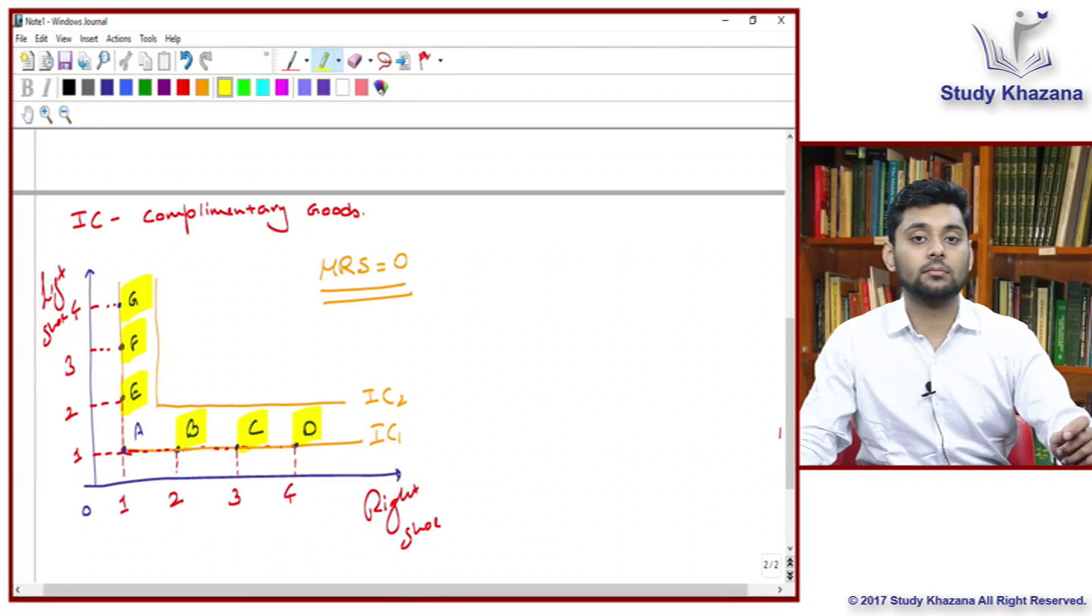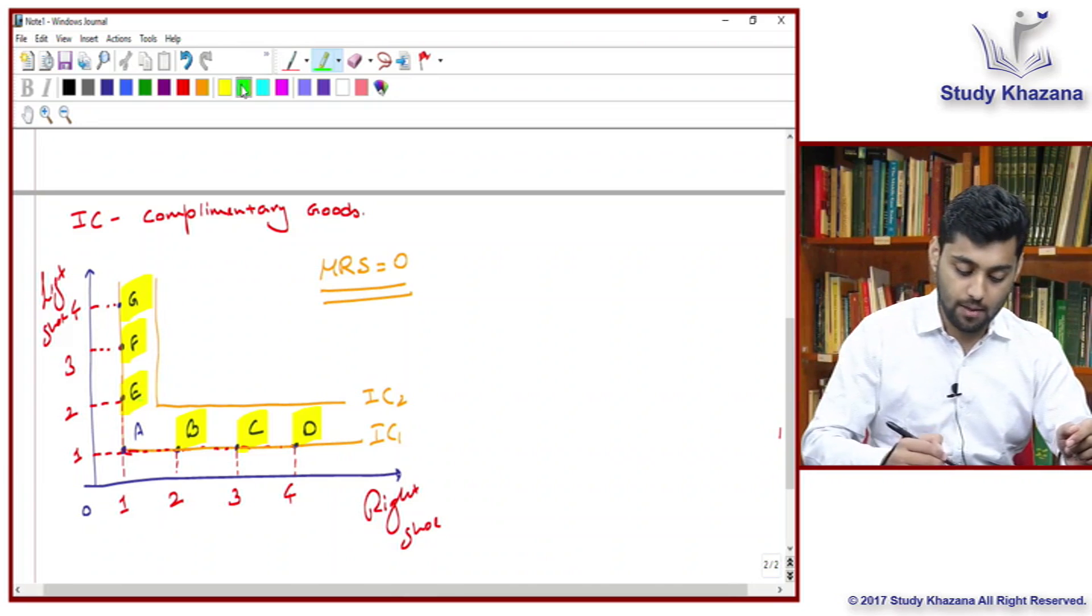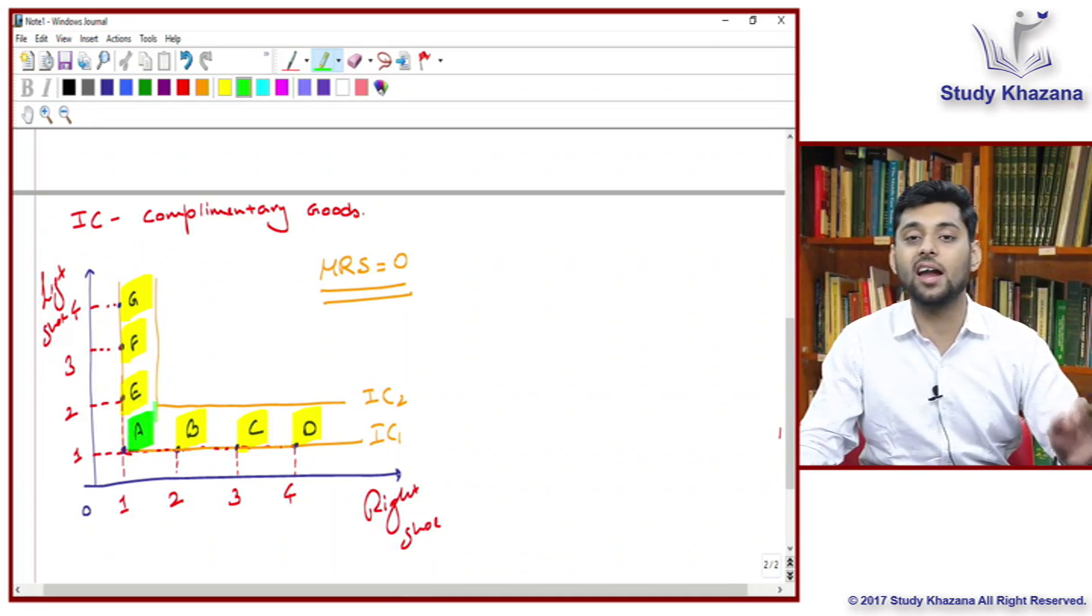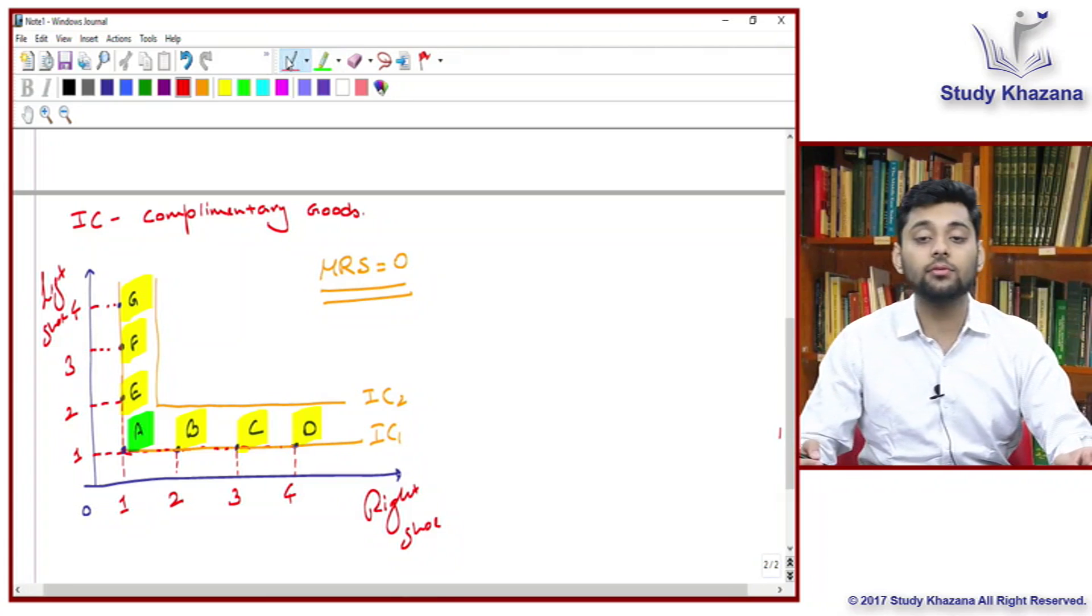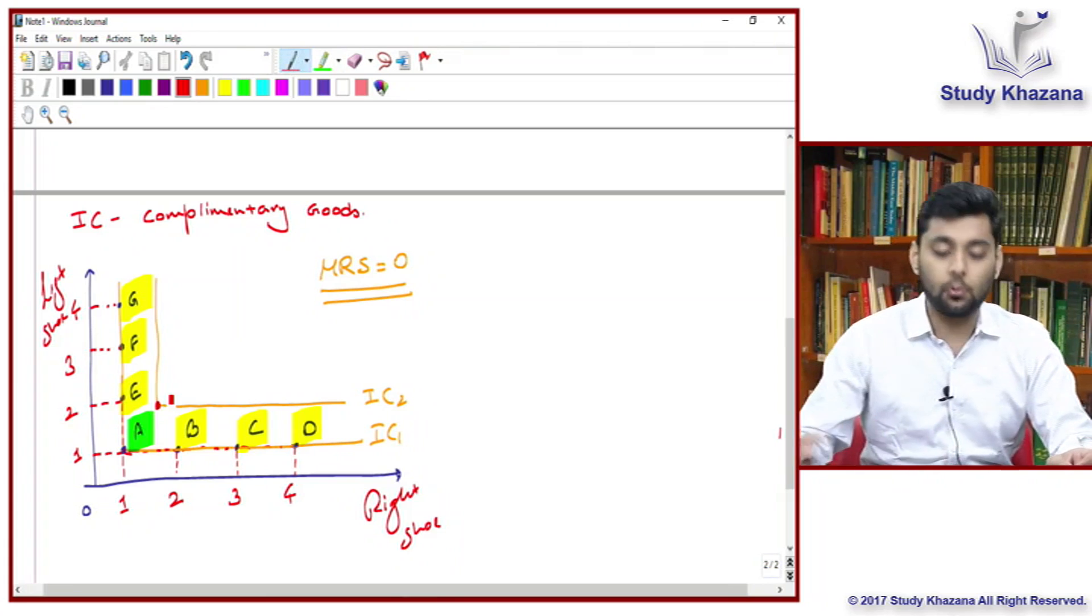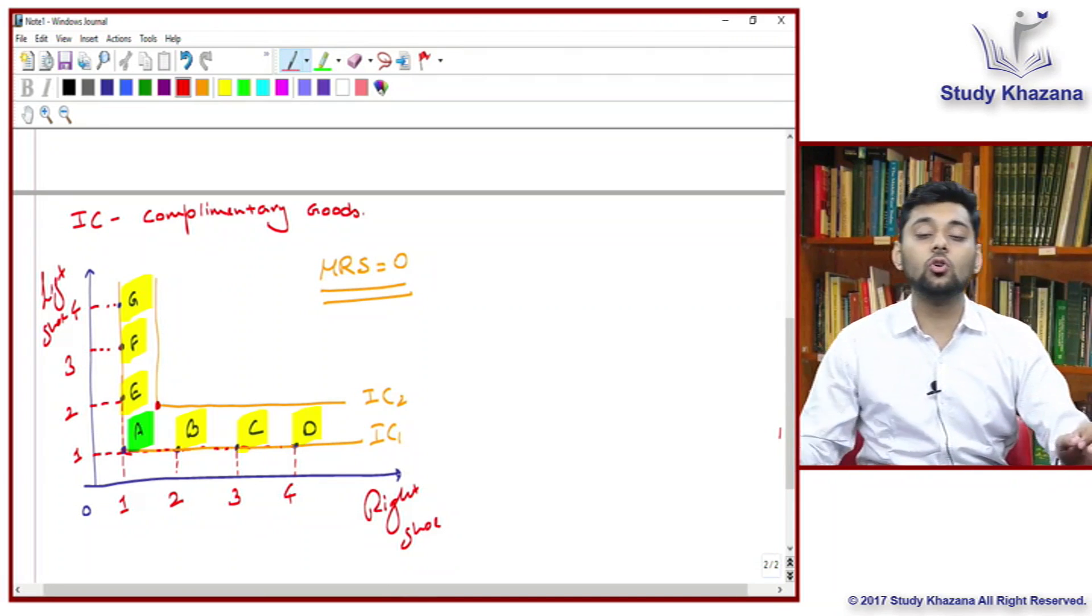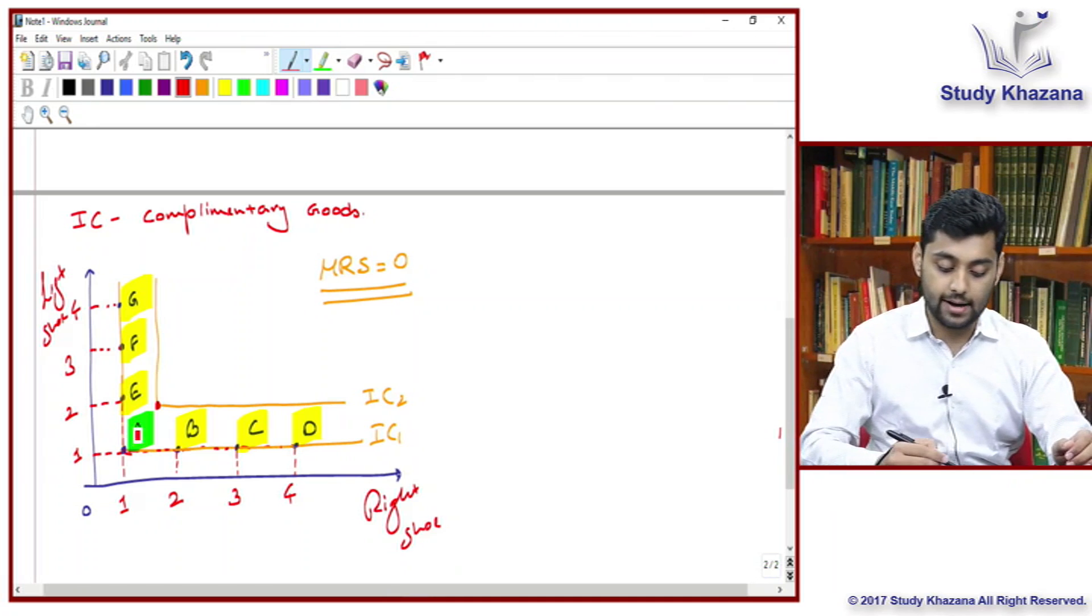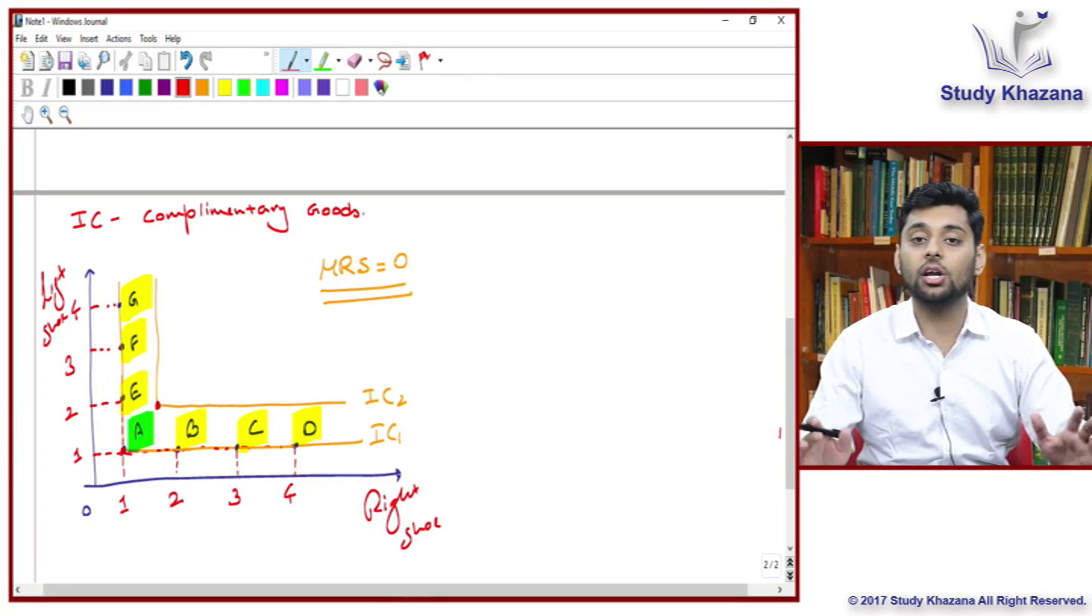How is it possible that consumption happens at bundles E, F, or G, or B, C, and D? Trading consumption is not possible at all. That is why bundle A is the only combination at which a consumer is going to consume. Similarly on the IC above IC1, the consumer will trade at this point. The consumer will consume at this point. That is why a consumer will consume only at these points. So that is why your indifference curve in the case of complementary goods is L shaped. Thank you so much. This was all about the indifference curve in the case of substitute and complementary goods.